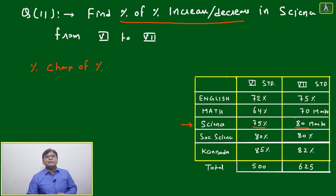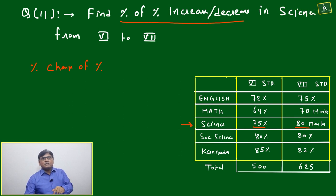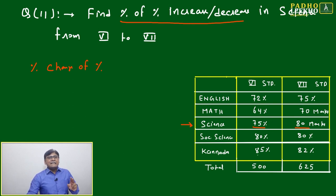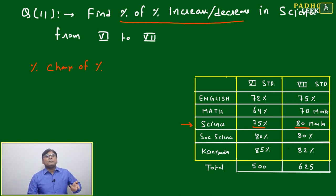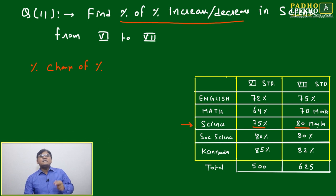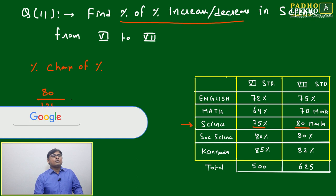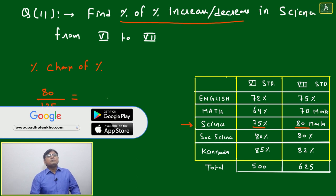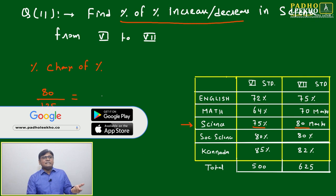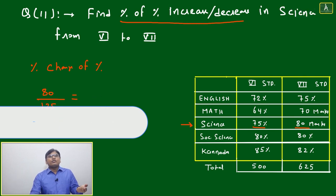Some data is given in marks — like math of seventh standard and science of seventh standard, which is given as 70 marks and 80 marks respectively. Science in sixth standard shows 75 percent, while in seventh standard she is getting 80 marks out of 125. We need to find the percentage value of 80 out of 125.